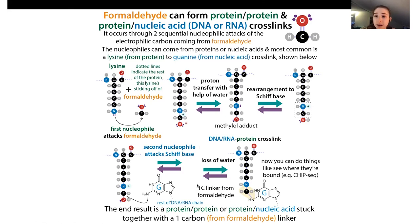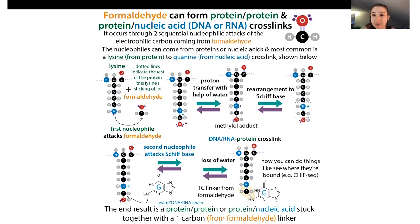For this example we'll use the most common crosslink found, which is lysine to guanine. This oxygen can attack that electrophilic carbon, then you get some rearrangements similarly to how we saw rearrangements before, and you get a loss of water. Now you end up with this one-carbon linker from formaldehyde - you've lost the oxygen from formaldehyde but kept the hydrogens - so you have this one-carbon linker between the DNA and the protein.